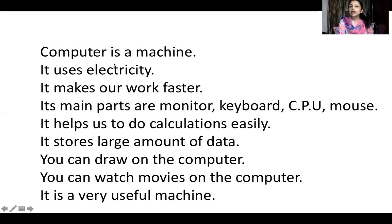So let's start once again. Computer is a machine. It uses electricity. It makes our work faster. Its main parts are monitor, keyboard, CPU, and mouse. It helps us to do calculations easily. It stores large amounts of data. You can draw on the computer. You can watch movies on the computer. It is a very useful machine.